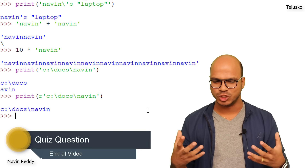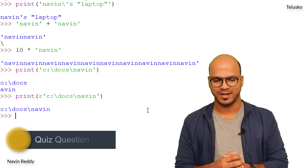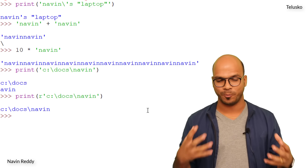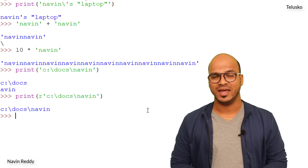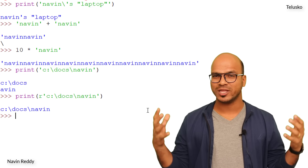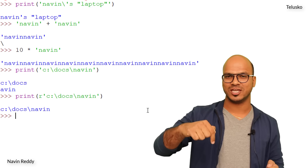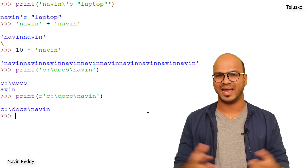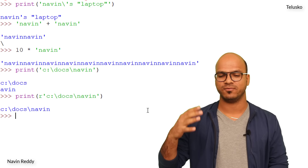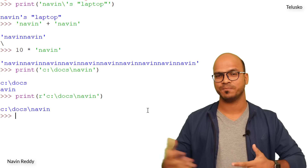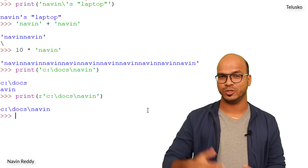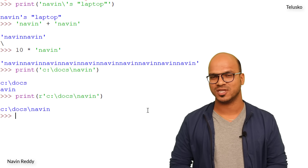In this video we covered arithmetic operators and basics of the print function. In the next video we'll talk about how to use variables. If you're enjoying this series, let me know your thoughts in the comments, and feel free to ask questions. Click like and subscribe for more videos. Thank you and bye-bye!